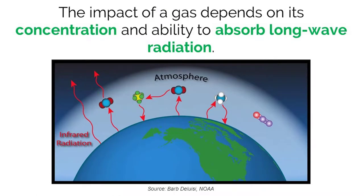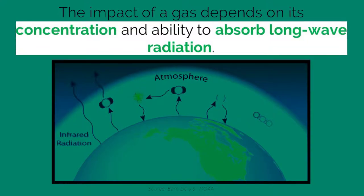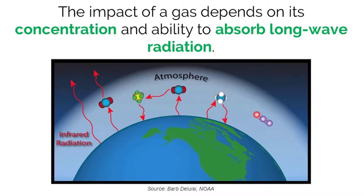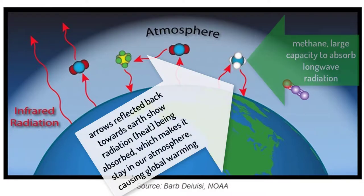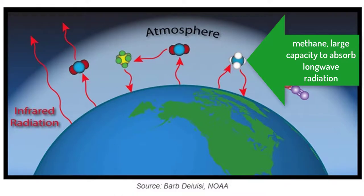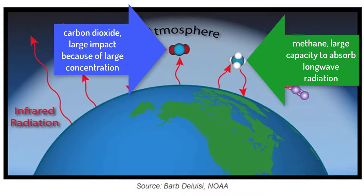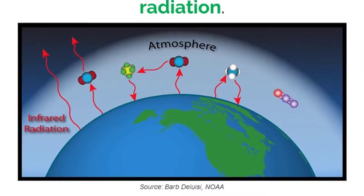These numbers are not normal and are only present due to societies and infrastructures that humans have built. As seen on the last slide, there are many different types of greenhouse gases, both naturally occurring and made by humans. The impact of a particular greenhouse gas depends on its concentration and ability to absorb long-wave radiation that is emitted from the Earth's surface. Some molecules, like methane, have a large capacity to absorb long-wave radiation compared to carbon dioxide. But because methane exists in low concentrations and carbon dioxide exists in extremely high concentrations, carbon dioxide has a larger total effect on global warming. This calculation for a molecule is called its global warming potential.